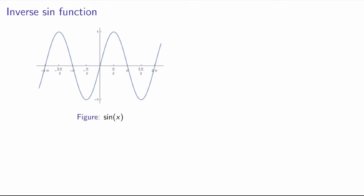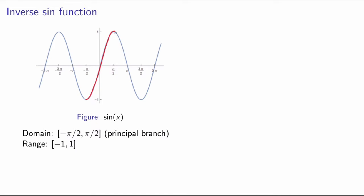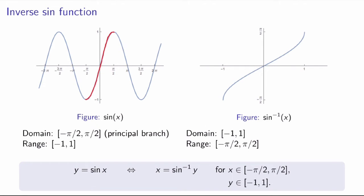We say that we define a principal branch for the sine function. The conventional choice for the sine function is to choose the principal branch to be between minus pi over 2 and pi over 2. Over this restricted domain the function becomes one-to-one and we can define its inverse. The graph of the inverse sine function is obtained from the branch by reflecting about the line y equals x. The domain and ranges are exchanged, and the statement is that y equals sine of x if and only if x equals the inverse sine of y, for x in the principal branch and y in the range of the sine function.